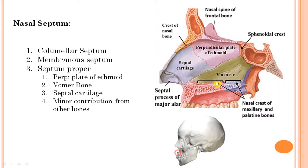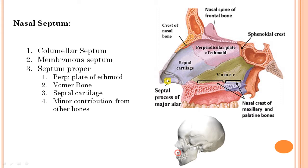The columnar septum and membranous septum are lined by skin. The septum proper is lined by mucous membrane. The membranous septum is the portion of the septum where there is no cartilage or bone — it is just two layers of skin opposing one another. You can feel it by holding the columella between your index finger and thumb and pinching slightly downward. Since it is lined by skin, hairs are present here, and these hairs do not allow large objects to enter the nasal cavity — so they have a protective role.